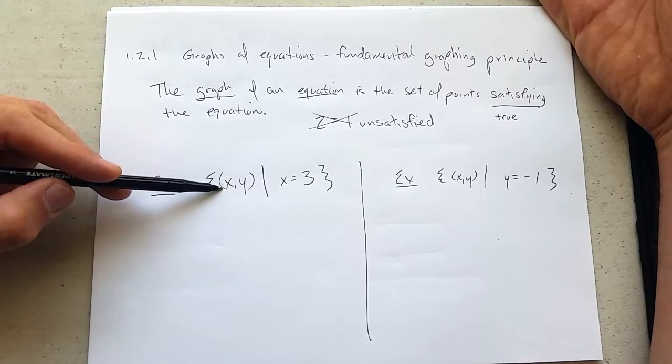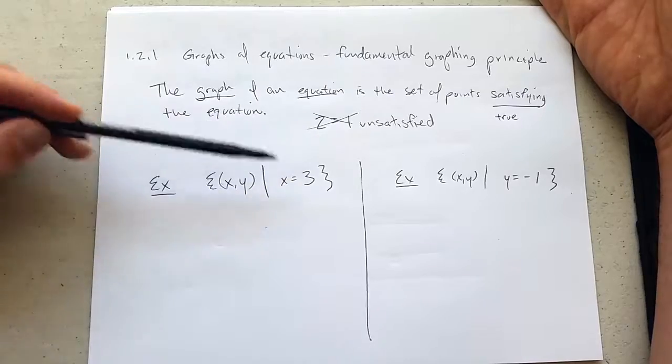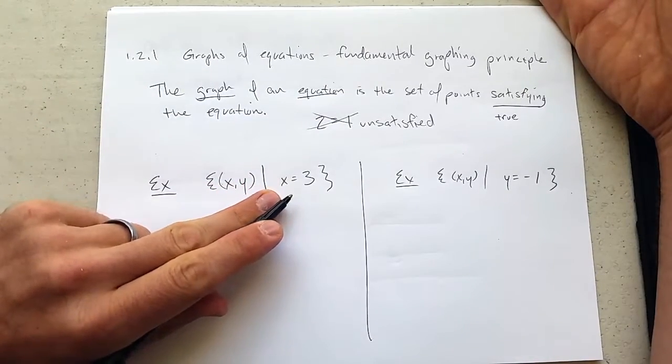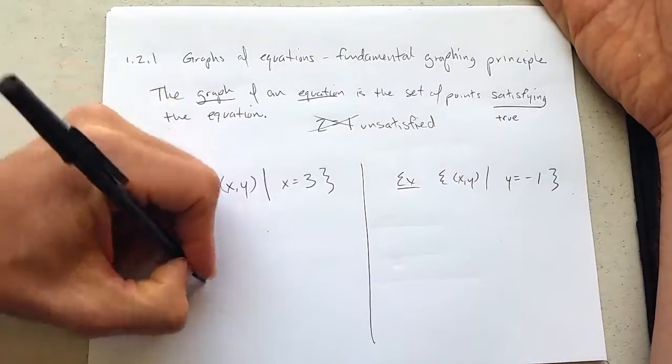This is points x, y, so it's on the plane, such that x equals 3. So it's going to be points that have a property. Now all this says x equals 3. It doesn't say anything about y. So let's think about what type of points have x-coordinate of 3.